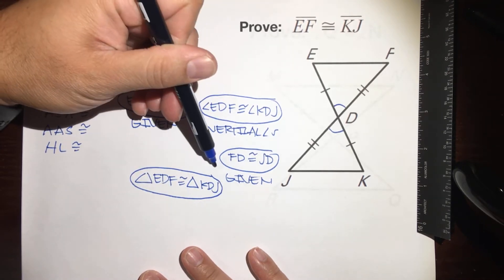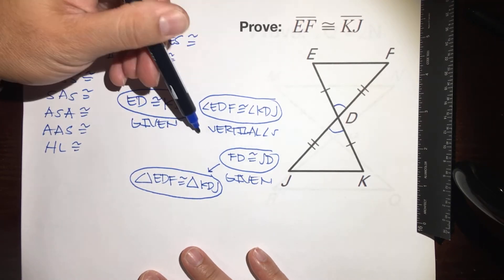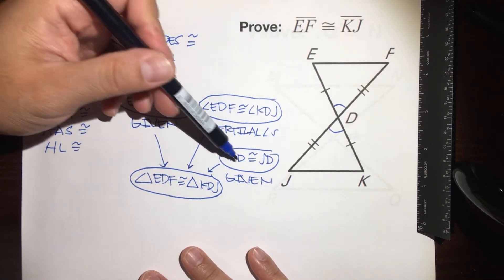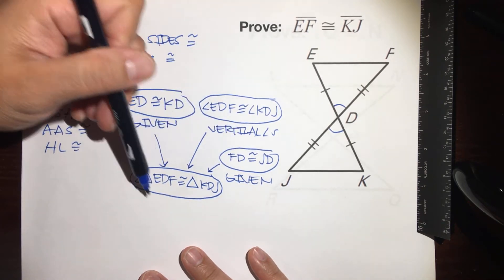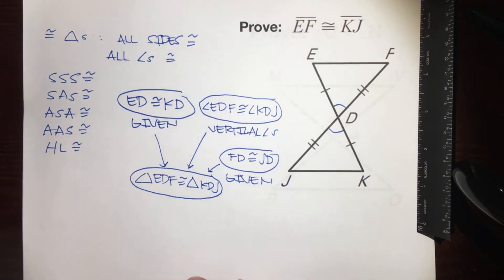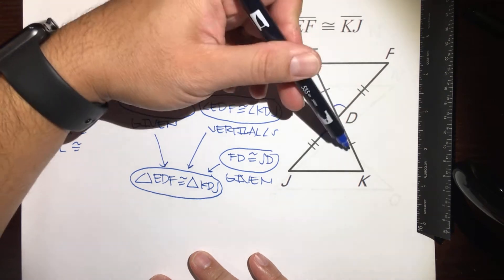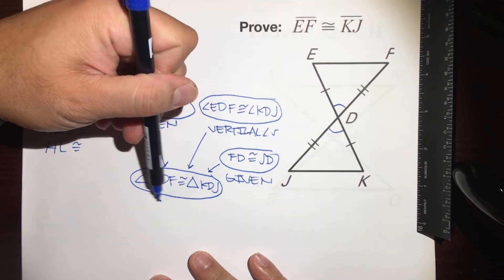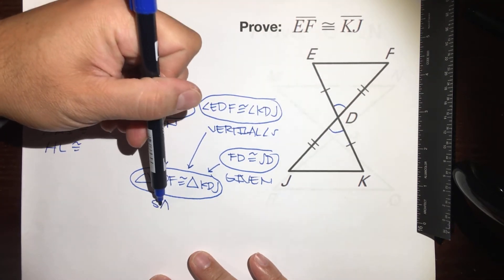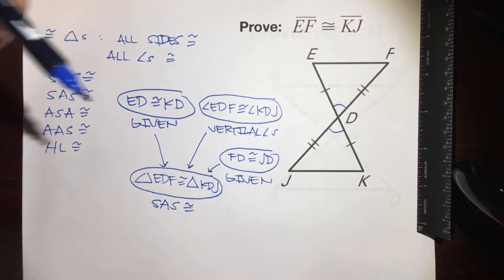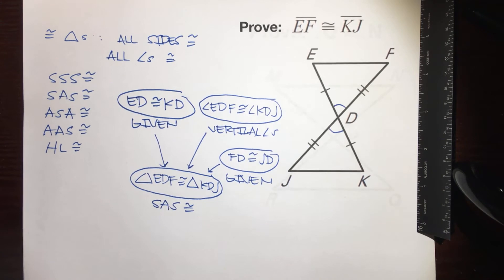Don't forget the arrows. These three pieces of information tell us that triangle EDF is congruent to triangle KDJ by side-angle-side congruency.